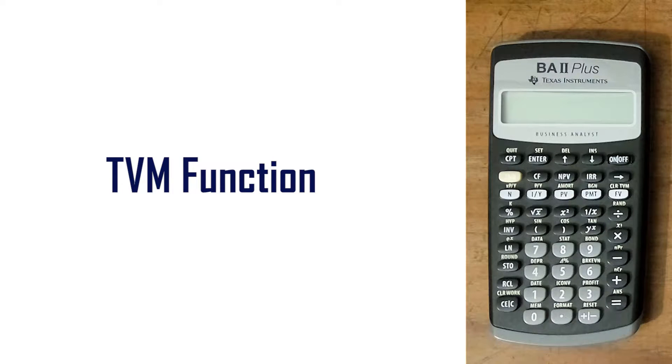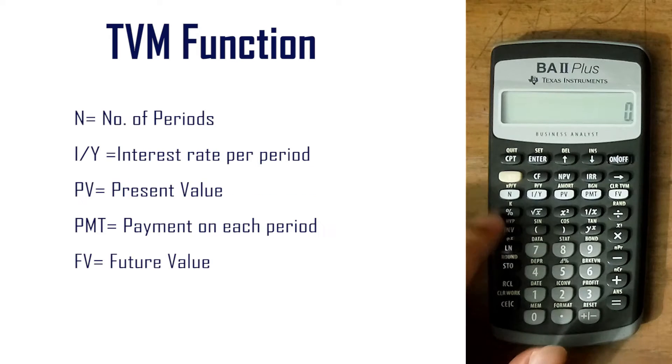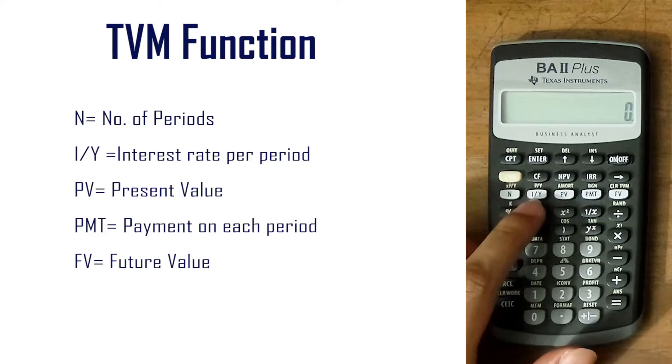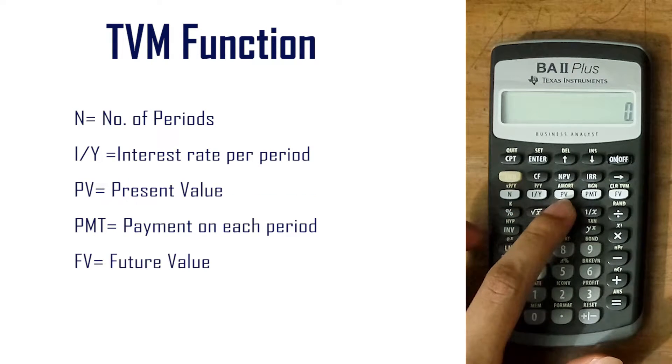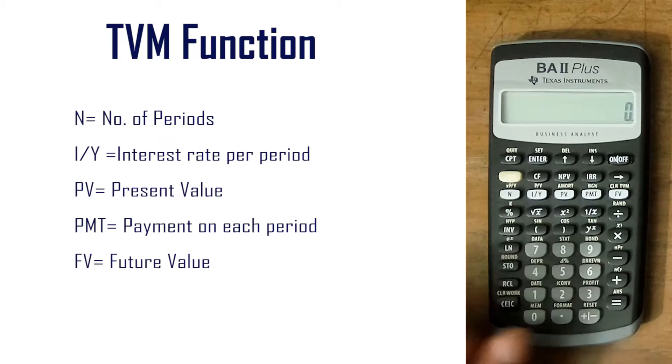In this video, we are going to learn the time value function on the BA2 Plus calculator. Here, n is the number of periods, i/y is the interest rate per period, followed by present value, payment, and future value.